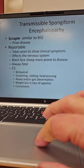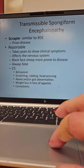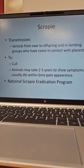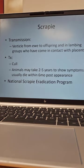They will have weight loss but they're still going to be eating — they'll be hungry, they're going to eat a lot but still lose weight — and they will eventually succumb to convulsions and seizures. Transmission is vertical: you will pass it to offspring in lambing groups who have contact with the placenta, so it is spread through the placenta. Treatment: you're going to cull them. It's fatal; if you can't treat it, there's nothing you can do. Animals may take two to five years to show symptoms, but usually die within six months once symptoms start.